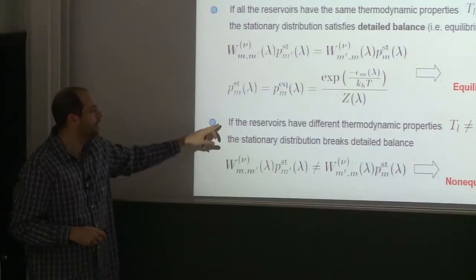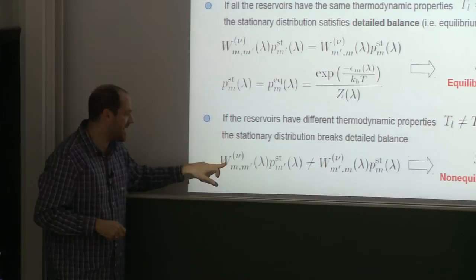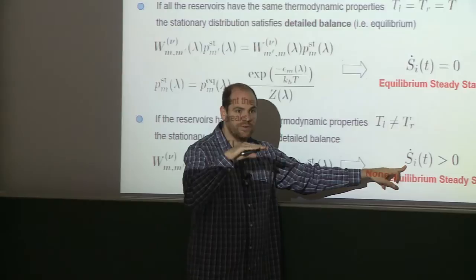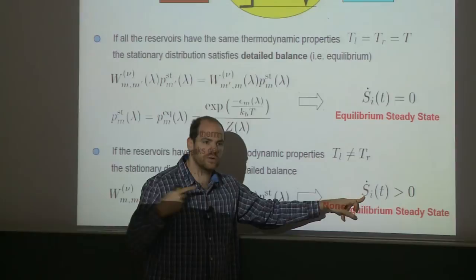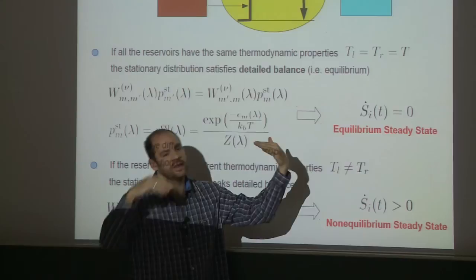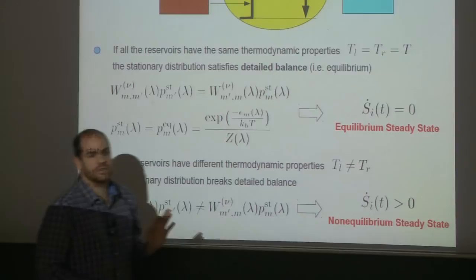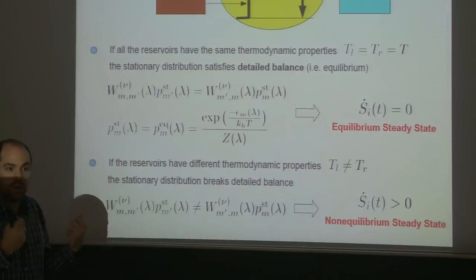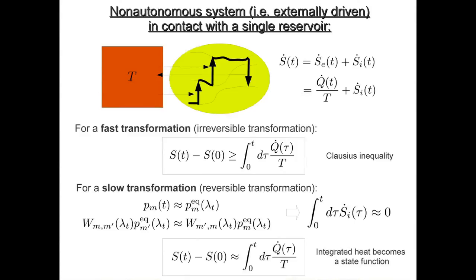What happens if the two temperatures are different? The detailed balance condition will be broken. The stationary state breaks this detailed balance condition, which means in this stationary state we have an entropy production. This corresponds to the fact that you have currents flowing through your system — a heat current flowing through it — and this is why entropy production is positive.